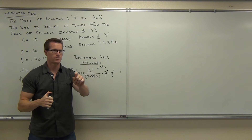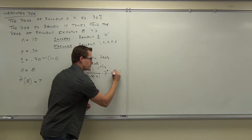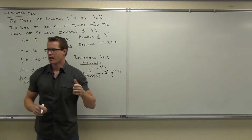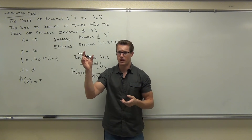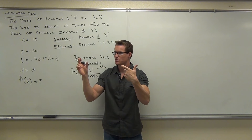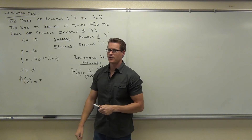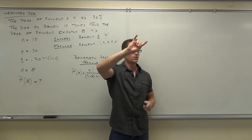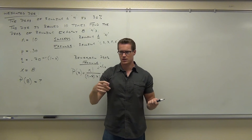N minus X would give you the number of failures. If you have X successes and N total trials, you have the total number of trials minus the number of successes — that gives you your failures. If you have eight successes out of ten trials, we want two, or ten minus eight, failures.